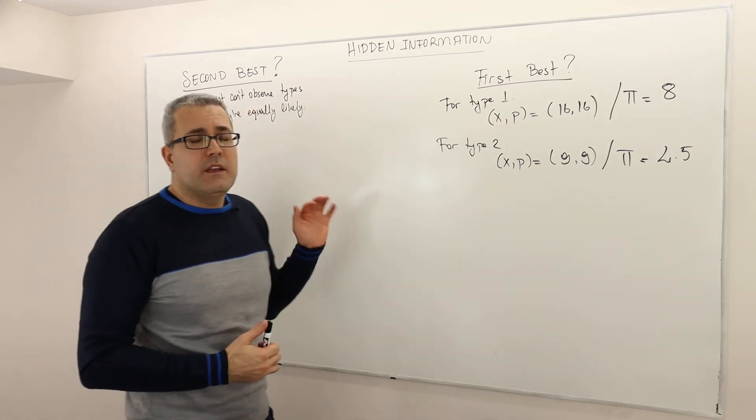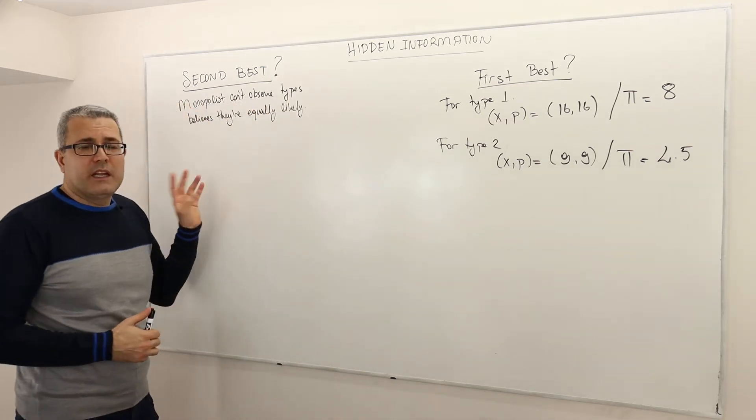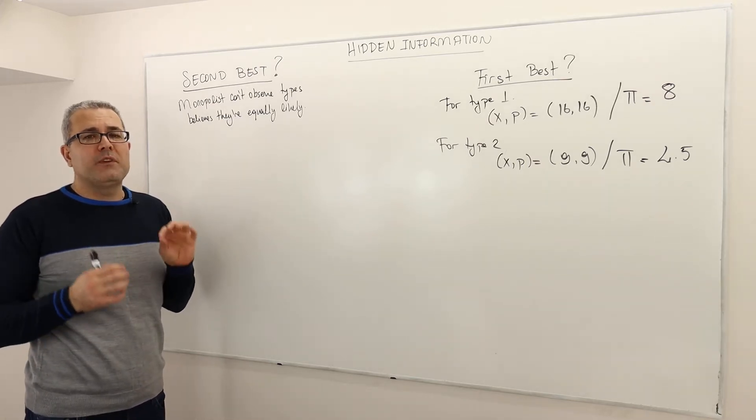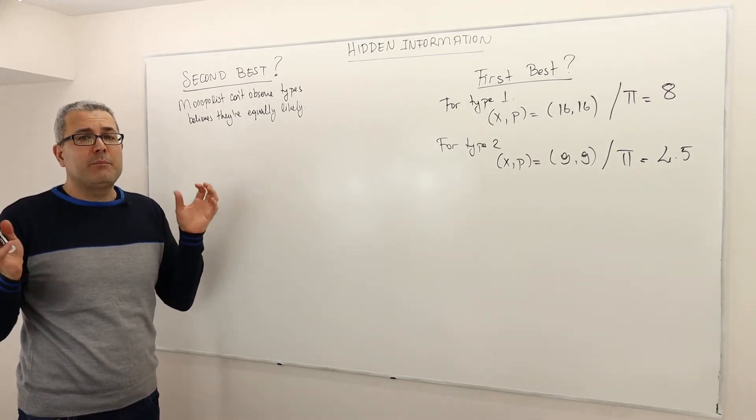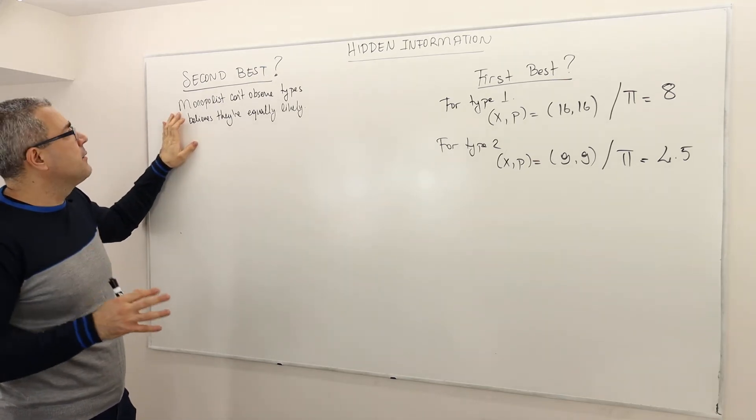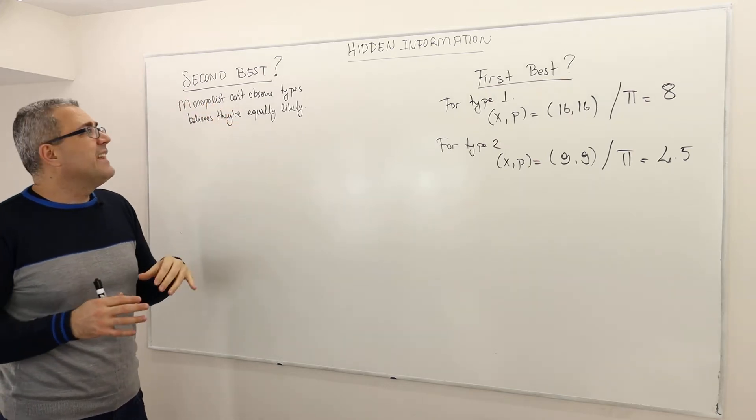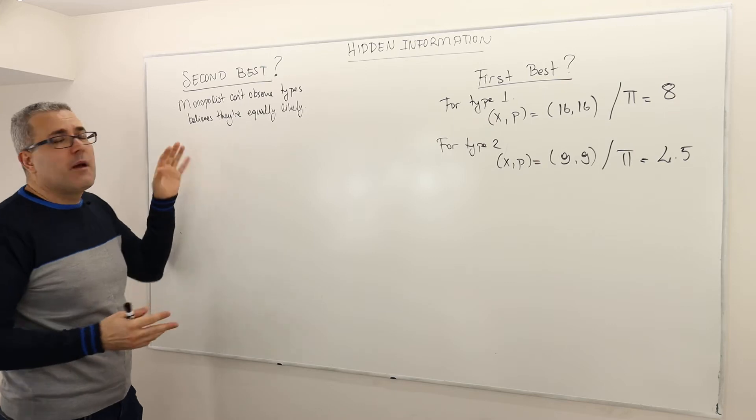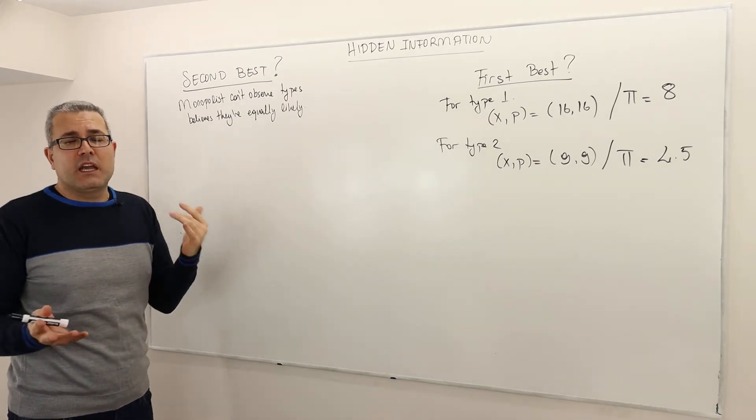Welcome back, guys. In this episode, I'm going to calculate the second best. What does that mean? That means I'm going to find the optimal contracts, optimal packages for the monopolist under the case, under the assumption that the monopolist cannot distinguish, observe the types of the customers, but believes that they're equally likely.